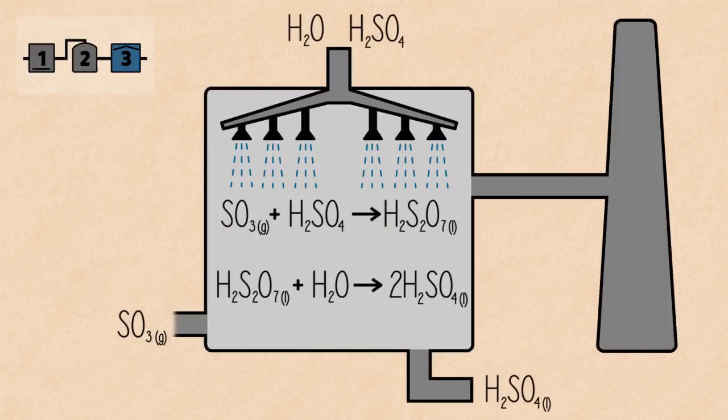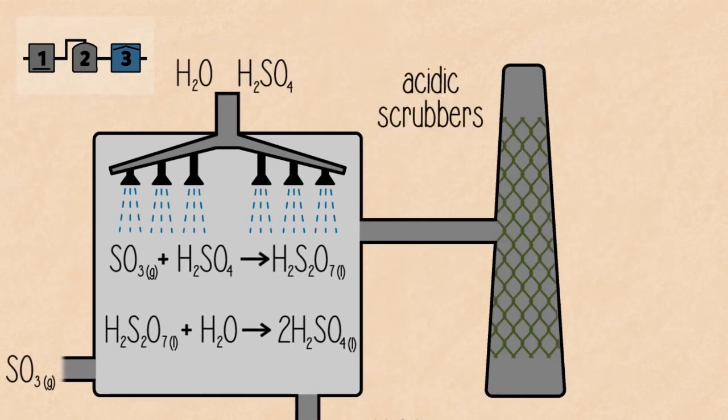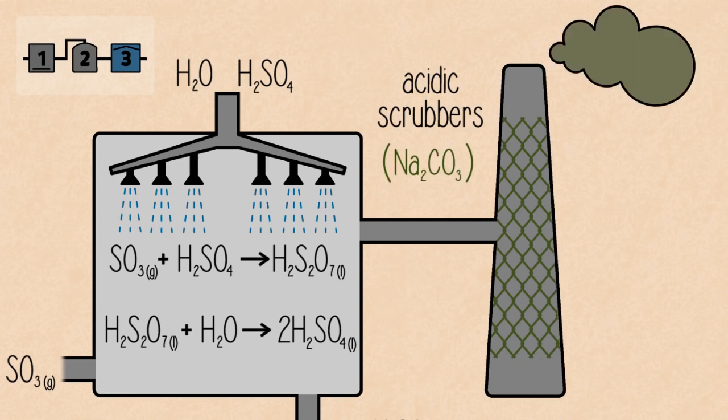The correct answer is that the chimney is usually fitted with acidic scrubbers. These are bases, like sodium carbonate. On contact, they neutralize the fumes, forming salt and water.